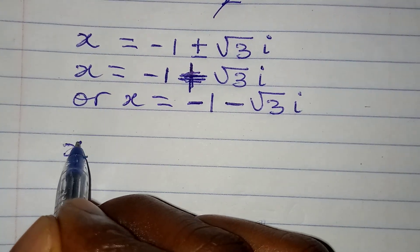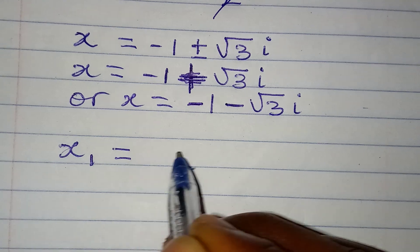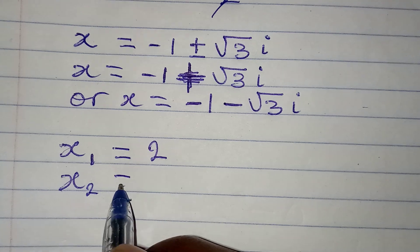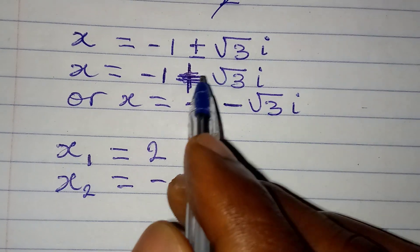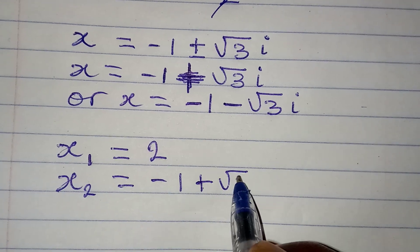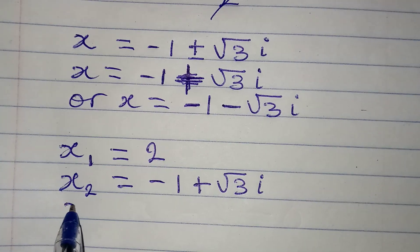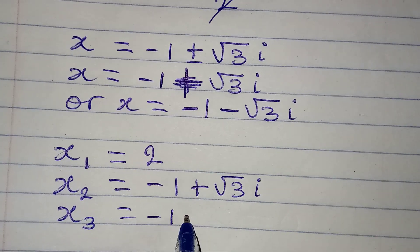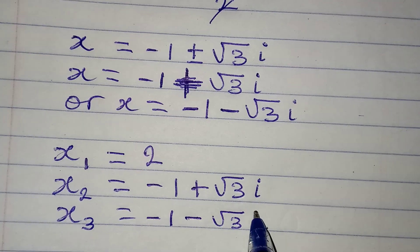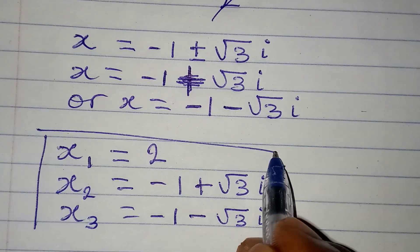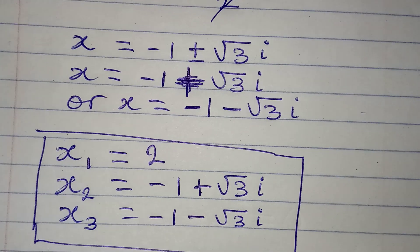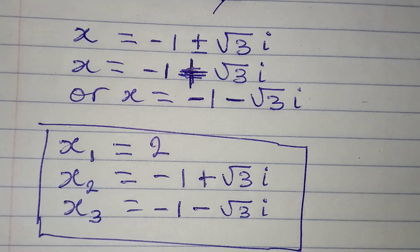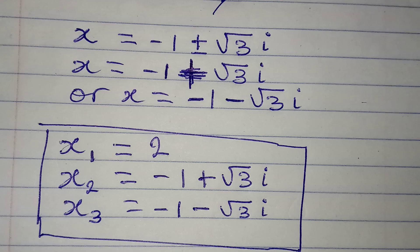Bringing the three solutions together: x1 equals 2, x2 equals minus 1 plus square root of 3 · i, and x3 equals minus 1 minus square root of 3 · i. These are the three solutions that satisfy the given equation, although the only real solution is 2. Thank you for watching.